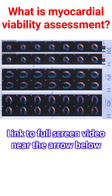In hibernating myocardium, the heart muscle has minimized its function as its blood supply has come down due to blocks in the blood vessel. The contractions of hibernating myocardium will improve either partially or completely once the blood supply is restored.